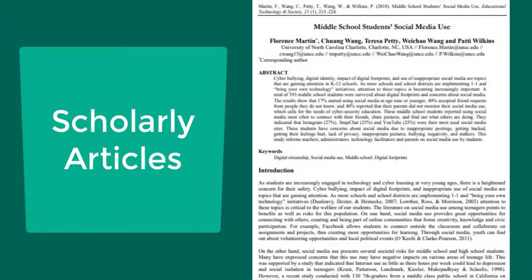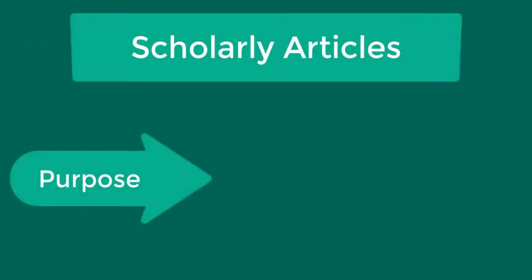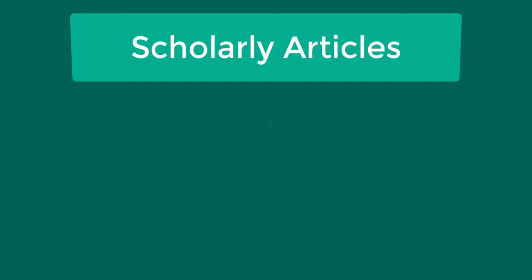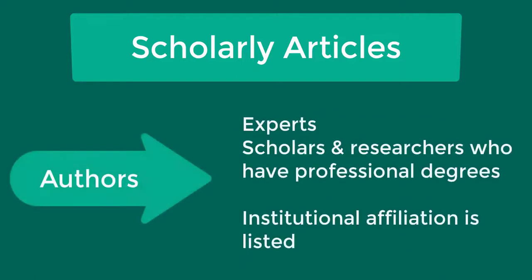Articles in scholarly journals are high-quality resources that are both written by experts and reviewed by experts. Typically you'll use peer-reviewed articles to support your arguments because of their high quality. The purpose of scholarly peer-reviewed articles is to communicate research findings and scholarly ideas, and to educate readers. Authors of these articles are experts, including scholars and researchers such as your professors.